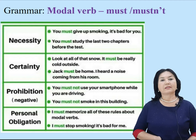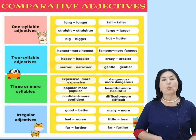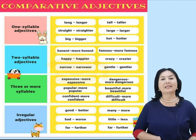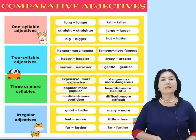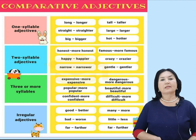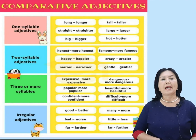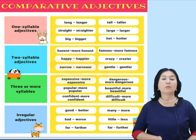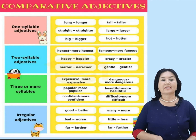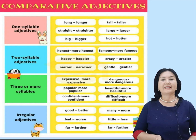This slide focuses on comparative adjectives. When we compare two items, we use comparative adjectives. Comparative adjectives are divided into four categories. One-syllable adjectives: long, longer; tall, taller. Two-syllable adjectives: happy, happier; lazy, lazier. Three or more syllables: beautiful, more beautiful; interesting, more interesting. Irregular adjectives: good, better; bad, worse; little, less.